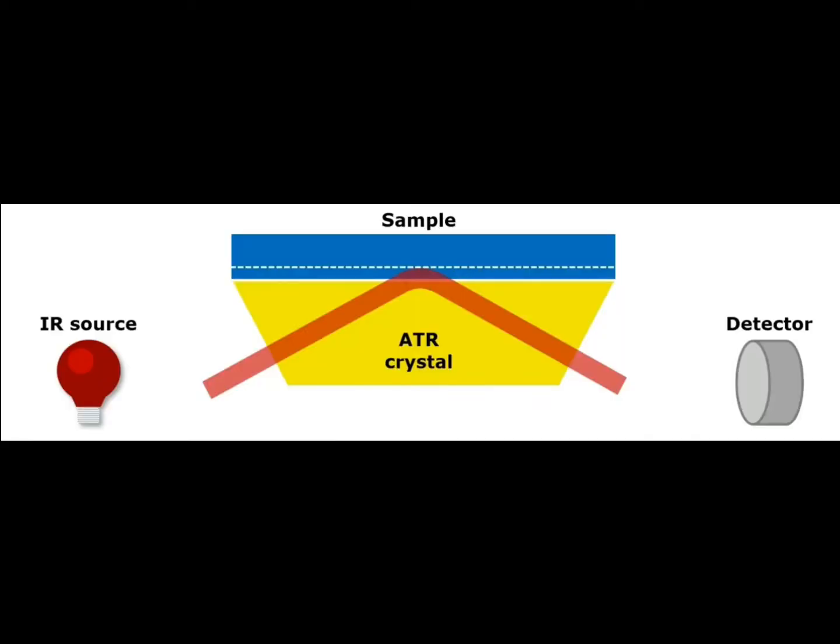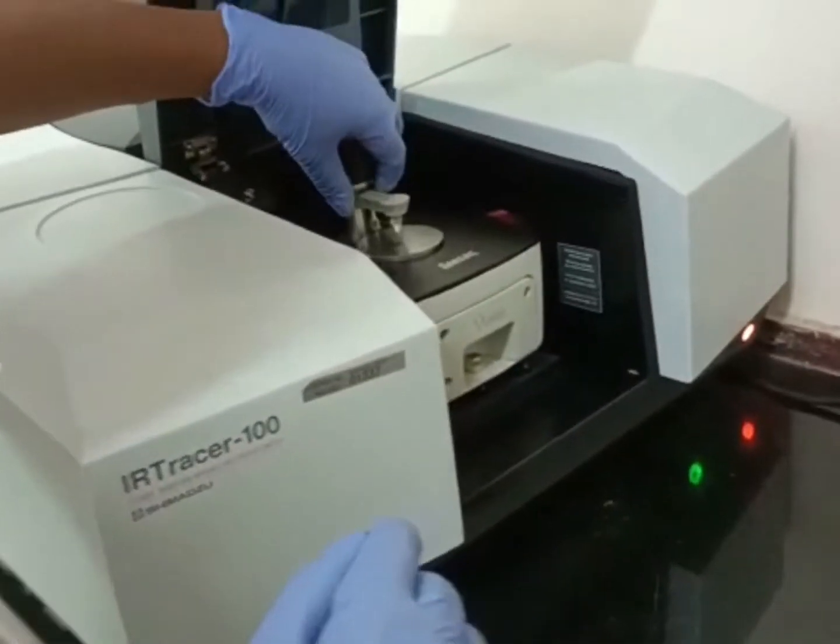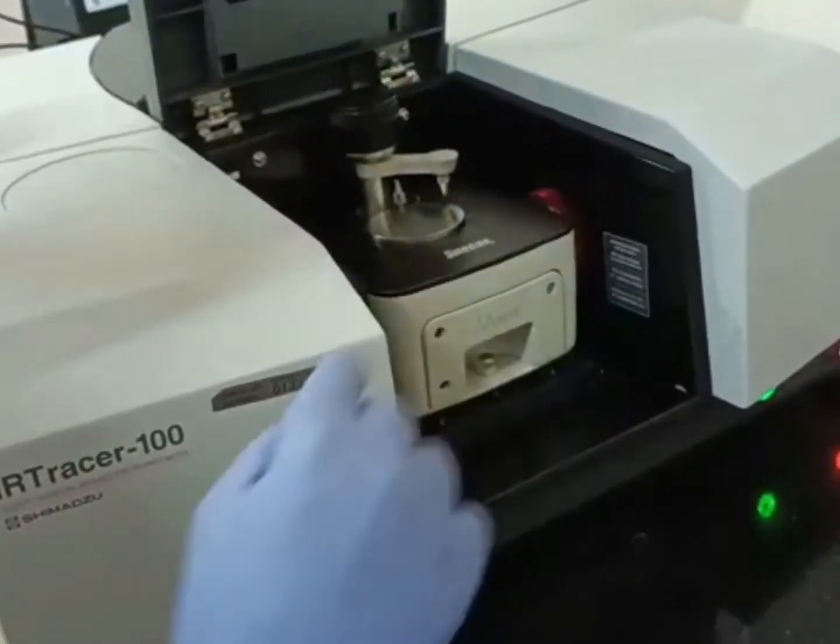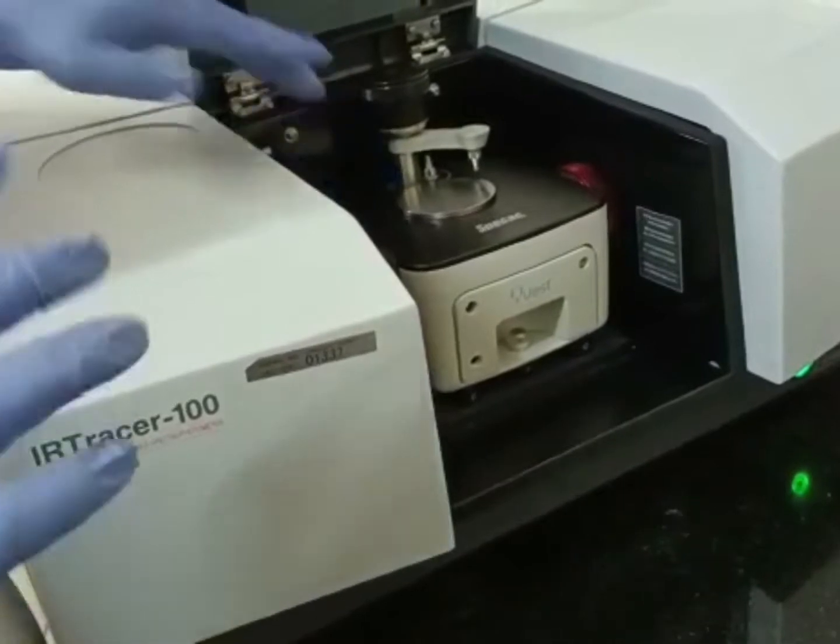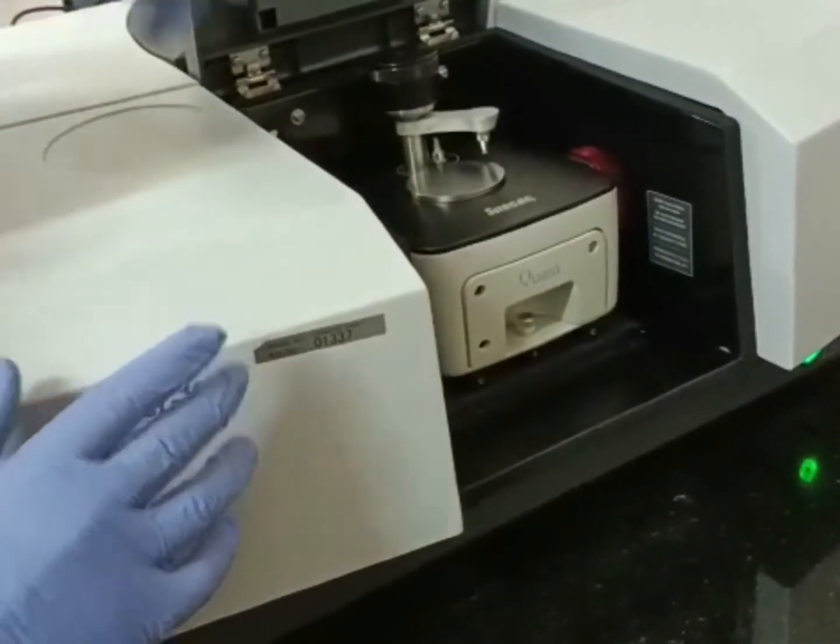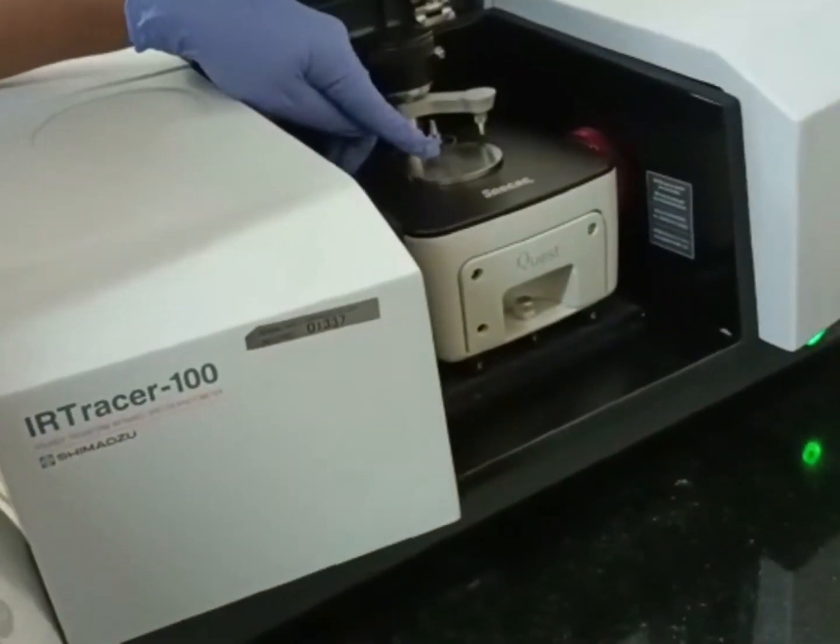A few micron area of the sample reflects the IR towards the detector. This is a hand clutch to apply pressure and a robust diamond ATR crystal. At the surface of this crystal we place the sample for analysis.